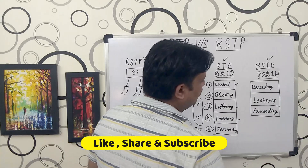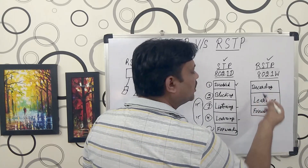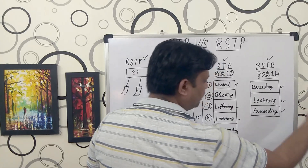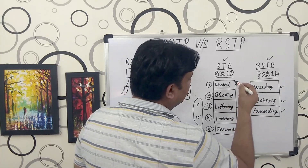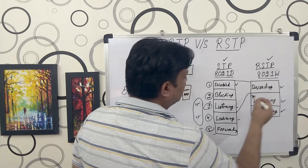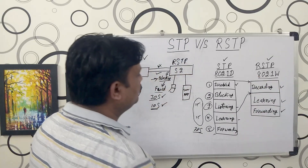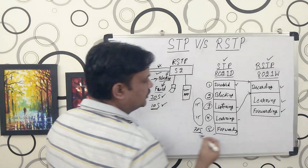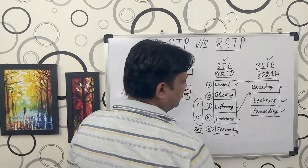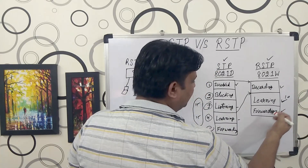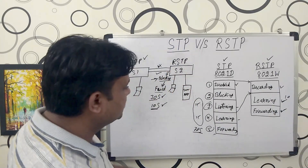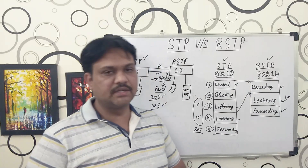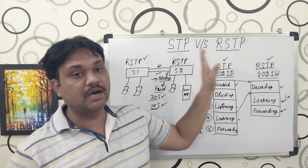RSTP uses only three stages: Discarding, Learning, and Forwarding. The Disabled, Blocking, and Listening states from STP are all combined under the Discarding state in RSTP. When RSTP detects a failed link and unblocks a blocked port, the states start directly from Learning, so it takes less than 10 seconds to reach Forwarding — at which point user data starts moving between network devices.